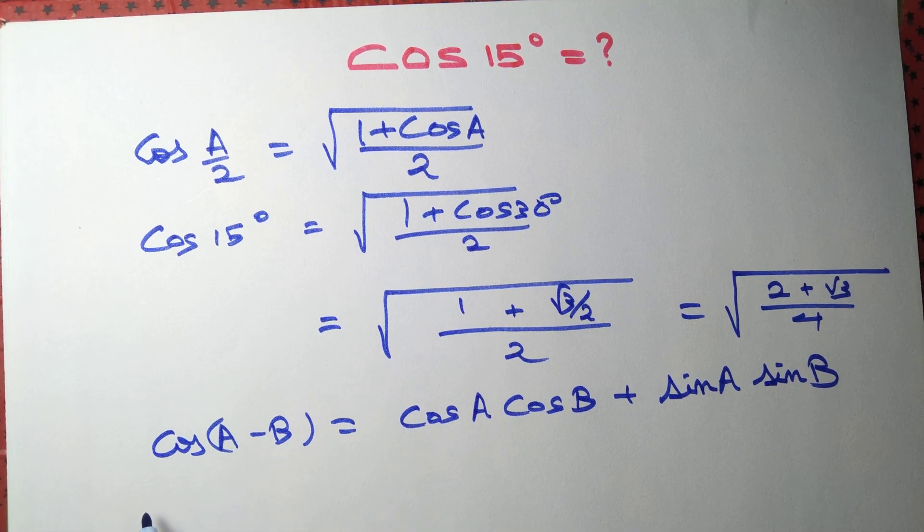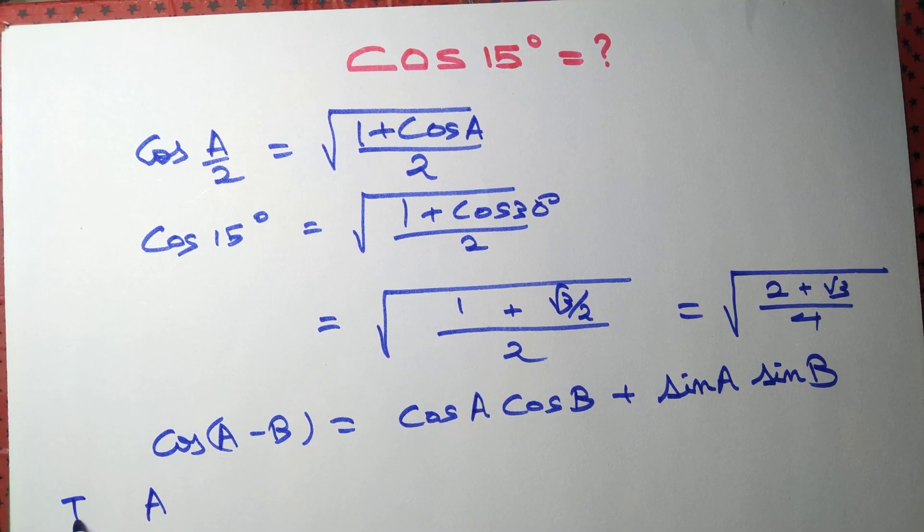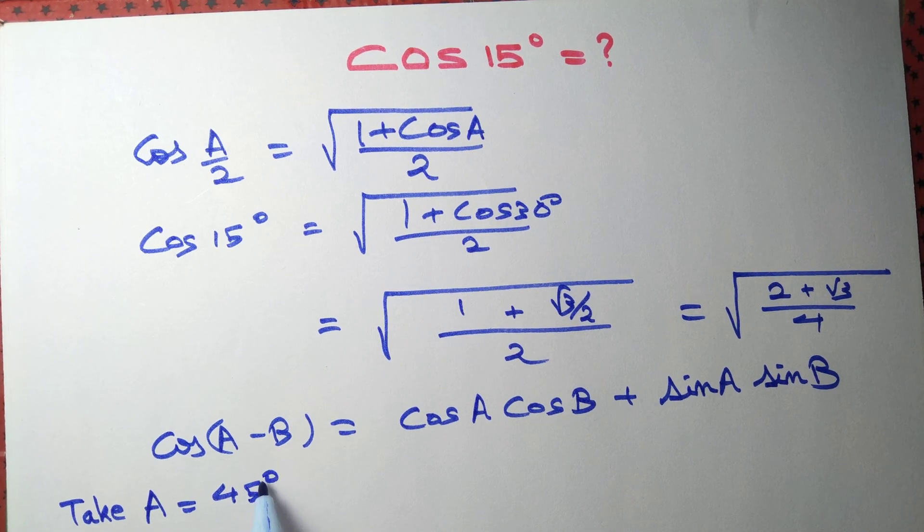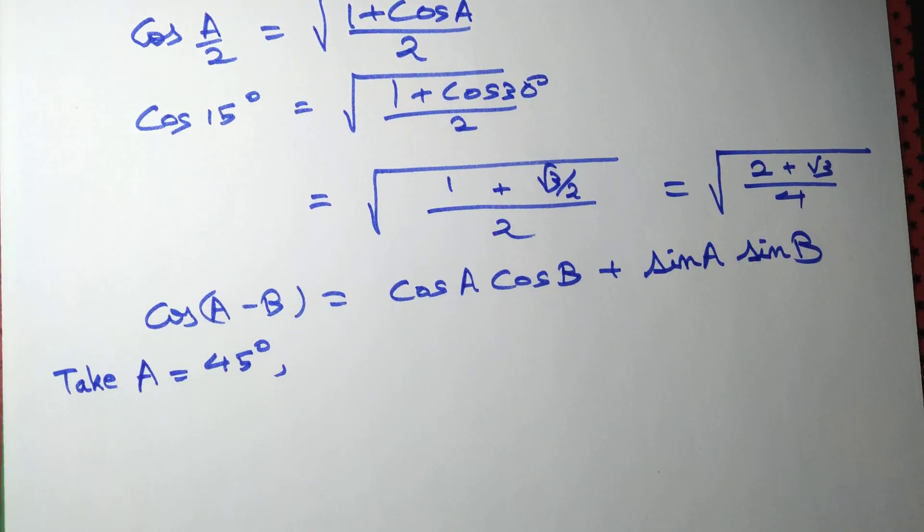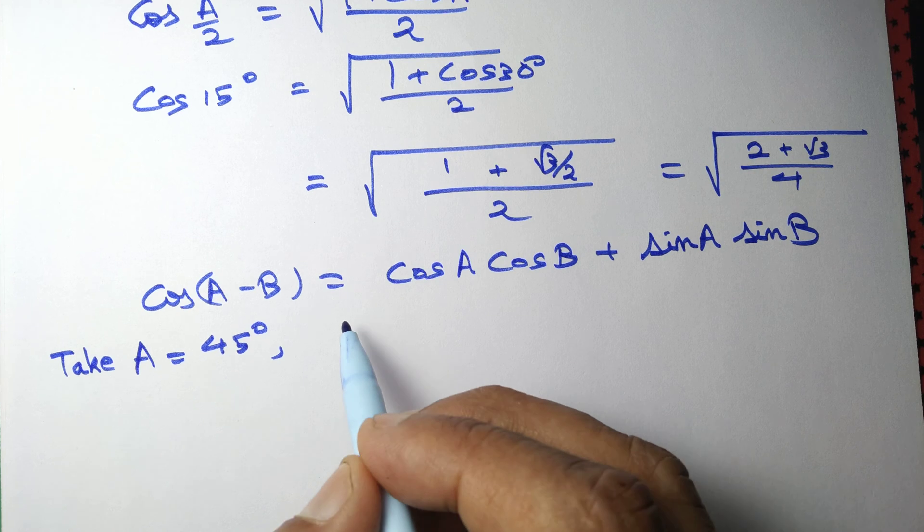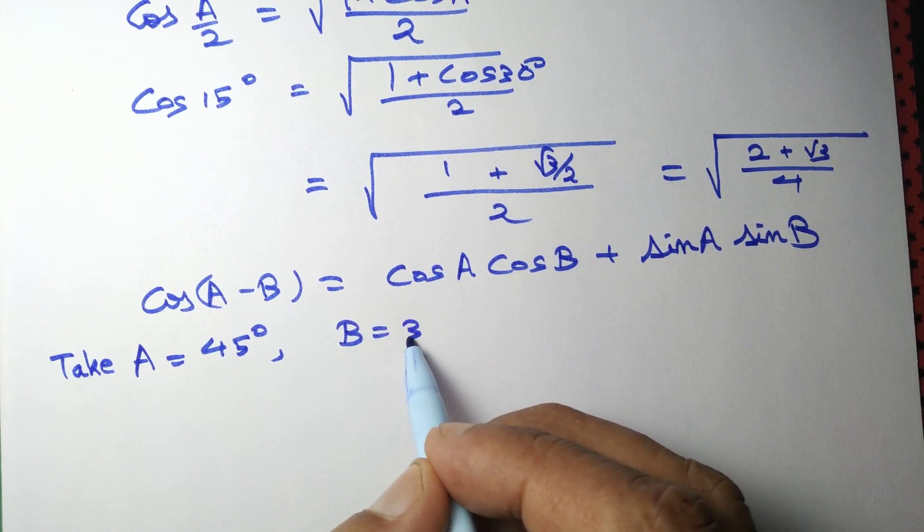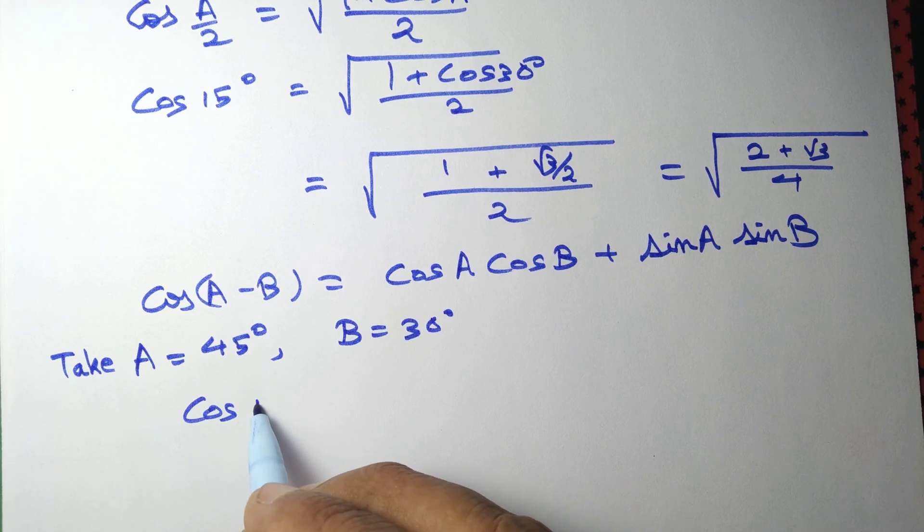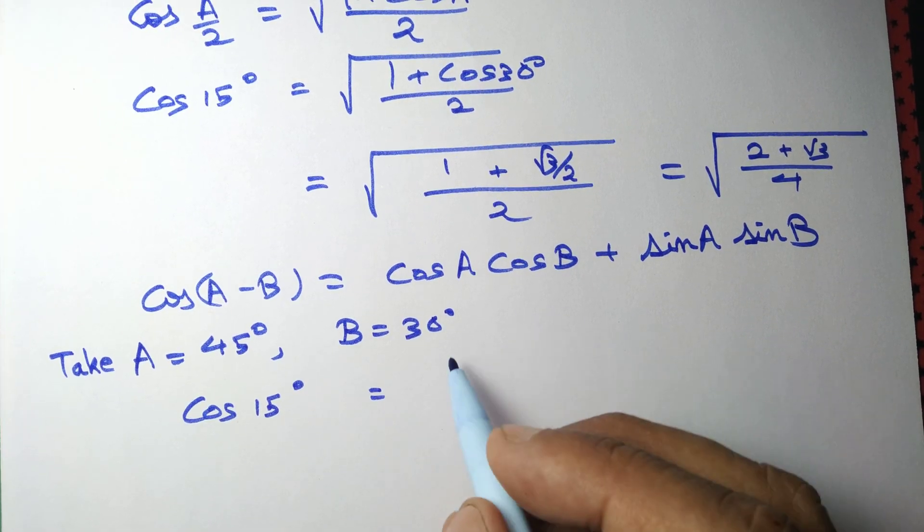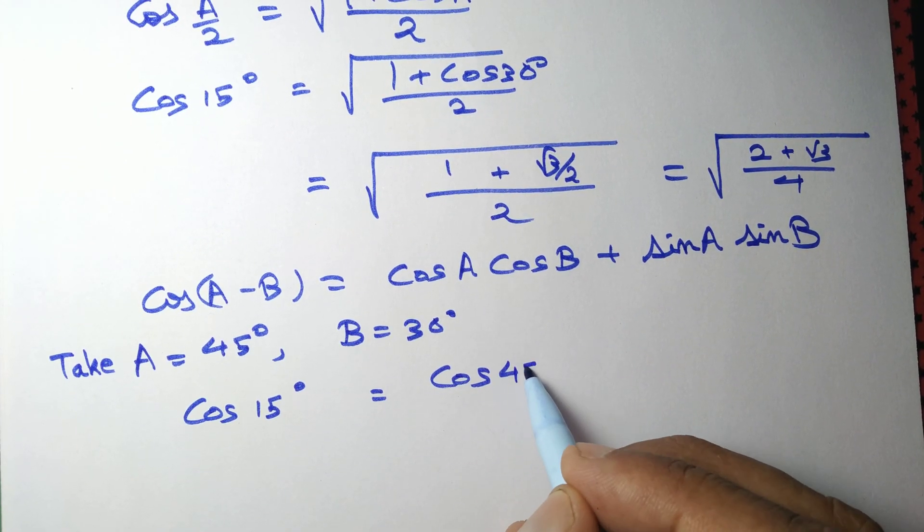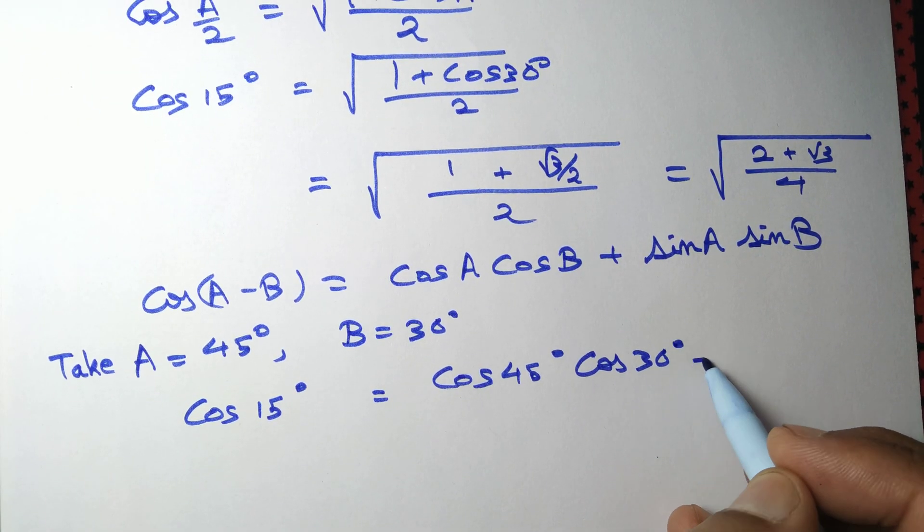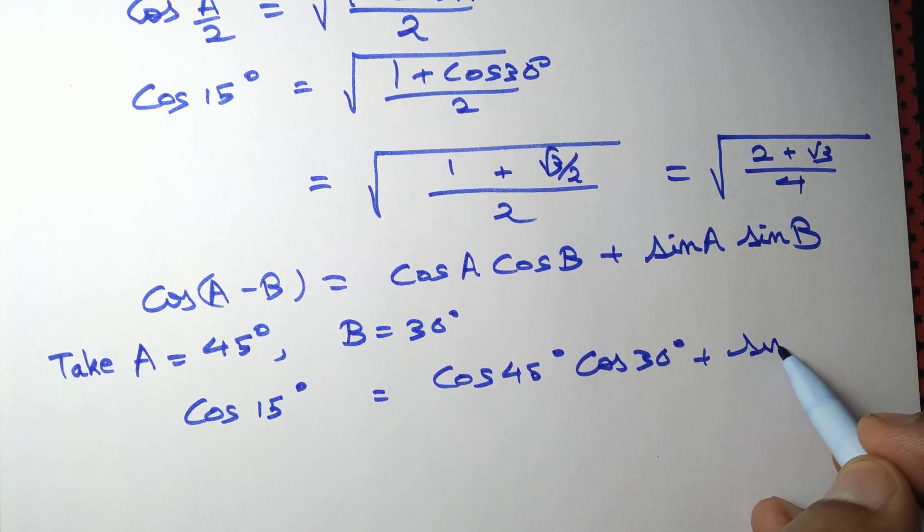Take A = 45° and B = 30°. Since 45 - 30 = 15, we have cos 15° = cos 45° × cos 30° + sin 45° × sin 30°.